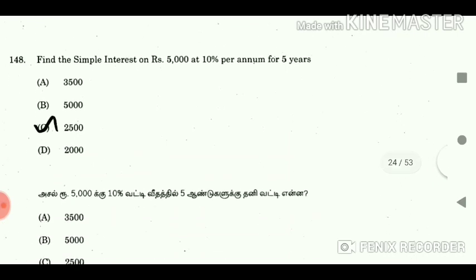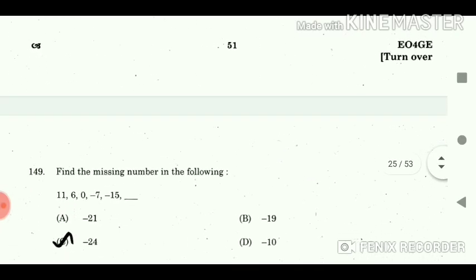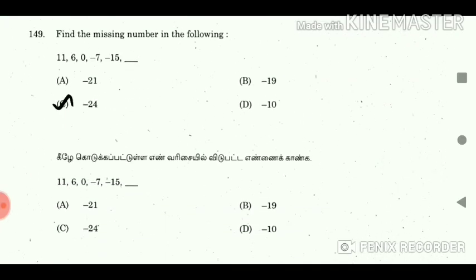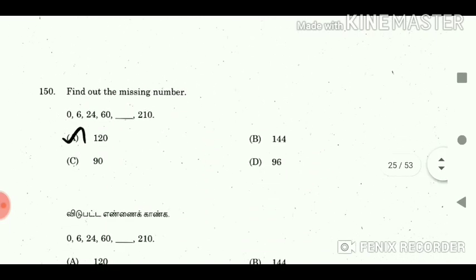Question 147: A dealer allows a discount of 20% and still gains 10%. What is the cost price of the book marked at Rs. 440? Answer: Rs. 320. Question 148: Find the simple interest on Rs. 5,000 at 10% per annum for 5 years. Answer: Rs. 7,500. Question 149: Find the missing number in the series 11, 6, 0, -7, -15. Answer: -24.